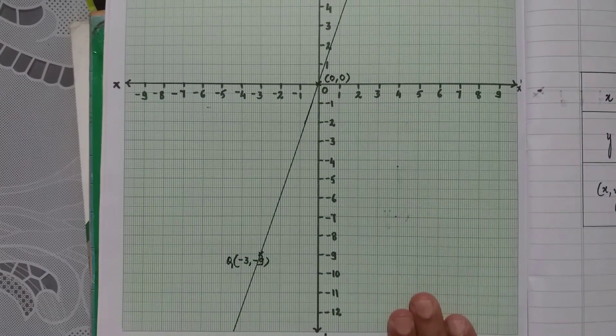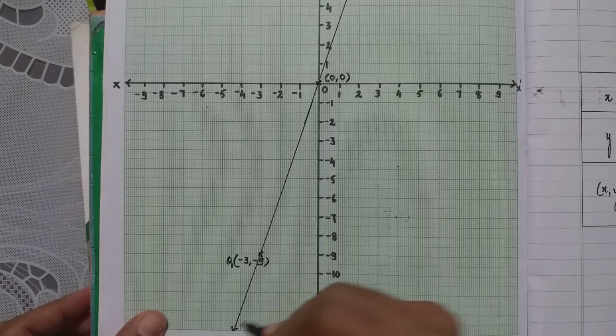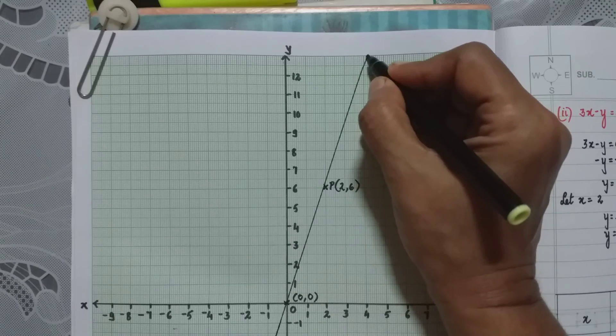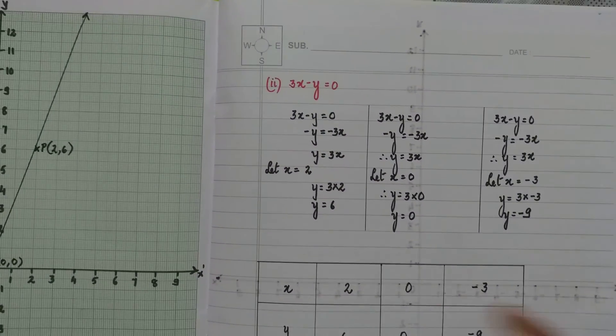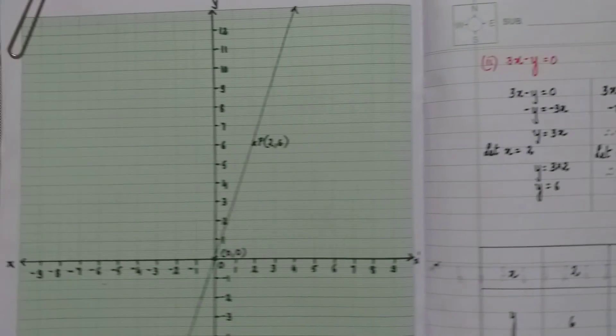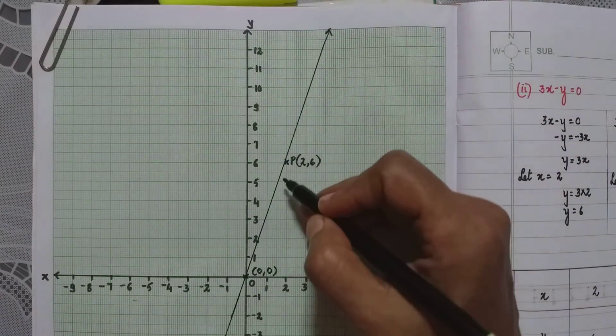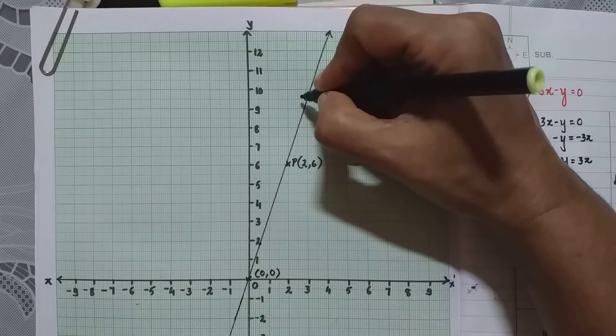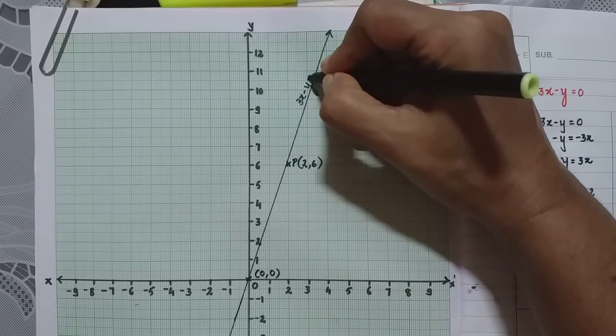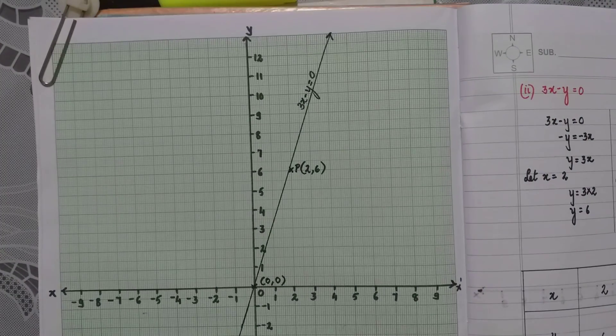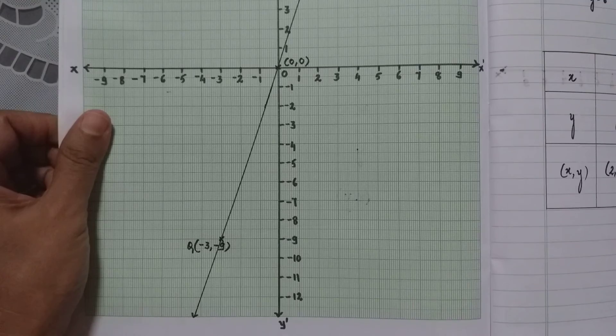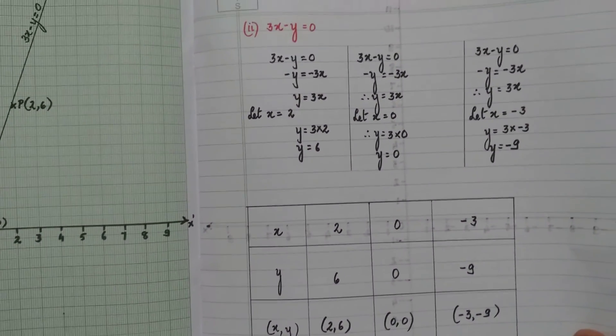Now what have we to do? On the two ends of the line, we put these arrow marks. So we put here also an arrow mark. Now what was the equation of the line given to us? 3x minus y equals 0. I told you the equation of the line has to be written against this line. So we now write here 3x minus y equals 0. So this line represents 3x minus y equals 0.